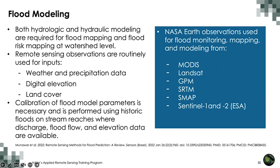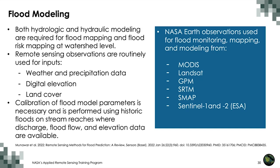Both hydrologic and hydraulic modeling are required for flood mapping and flood risk mapping at watershed level. Remote sensing observations are routinely used for inputs such as weather, precipitation, digital elevation, and land cover. NASA Earth observations used include MODIS, Landsat, Sentinel-1 and -2 for land cover; GPM for precipitation; SRTM for elevation data; and SMAP for soil moisture. Calibration of flood model parameters is performed using historic floods on streams where in-situ observations are available — discharge, flood flow, and water elevation — and model outputs are compared with these parameters.